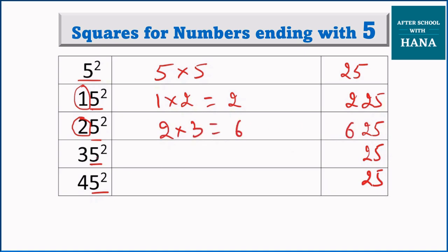35 squared. What is here? 3. What we are going to do to 3? We will multiply it by 4. 3 fours are 12. So 35 squared becomes 1225.